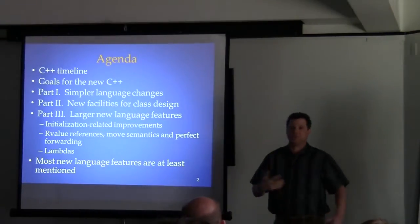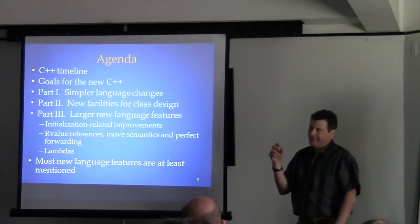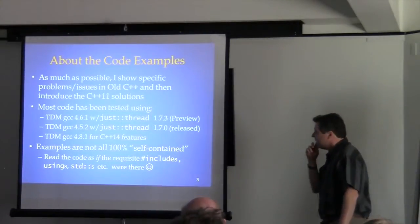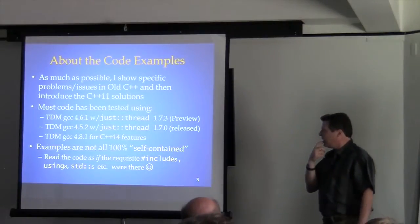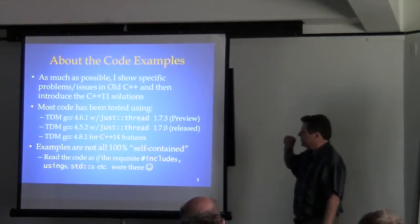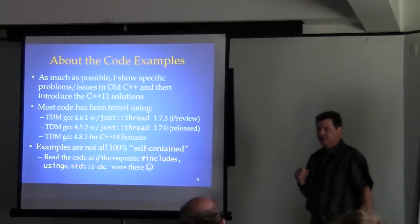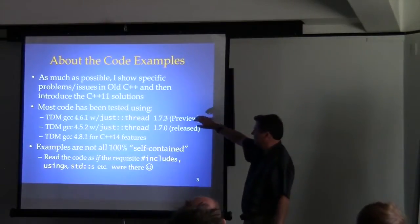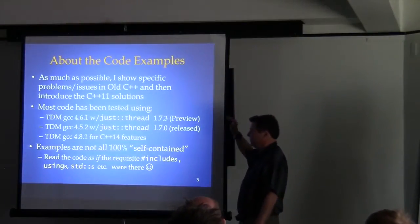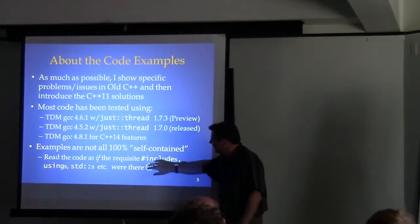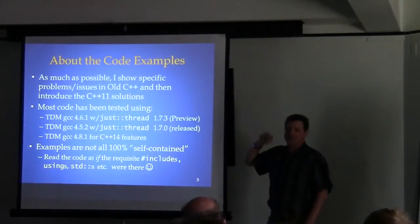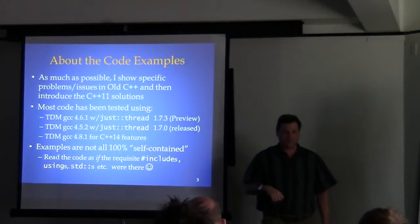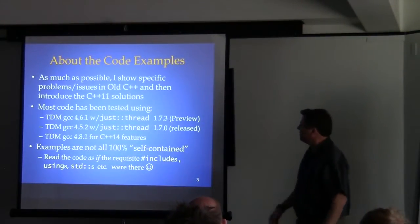I try to at least mention just about every language feature I'm aware of — there's at least a line on it somewhere, though not a whole lot of gory detail on some of it. The code you see has been tested on several versions of TDM, which is a nice version of GCC that comes with a Win32 installer. The examples aren't necessarily compilable as shown on the slides because I cut off includes and namespace qualifiers just to make them fit.